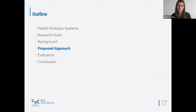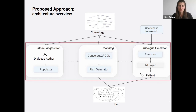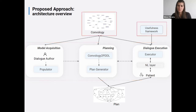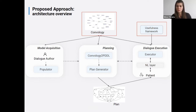Now I can finally introduce the approach we are proposing. This is an overview — the architecture proposed during my research is composed mainly of three units: model acquisition, a planning unit, and the dialogue execution unit. This approach is supported by two external resources: an ontology and a usefulness framework. The plan is not seen as an external resource because it's generated in the planning layer.